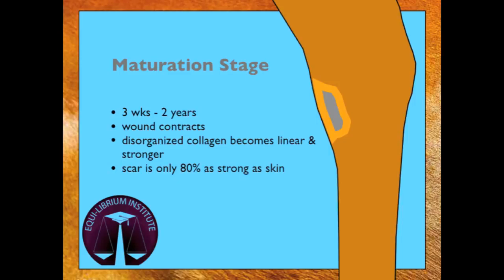The final stage of healing is the maturation stage. This stage starts at three weeks and can continue for the first two years after the injury occurs. During this stage, the wound contracts and the disorganized collagen becomes more linear and strong. The resulting scar, however, will only be 80% as strong as the original skin was.